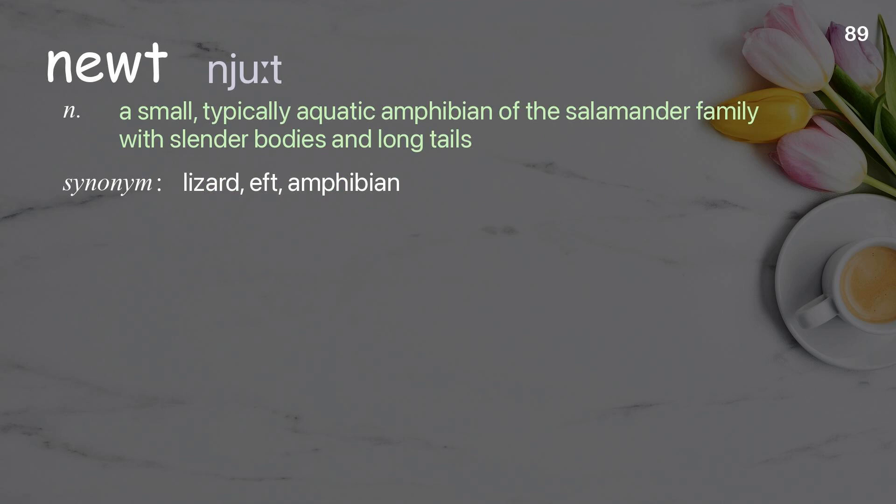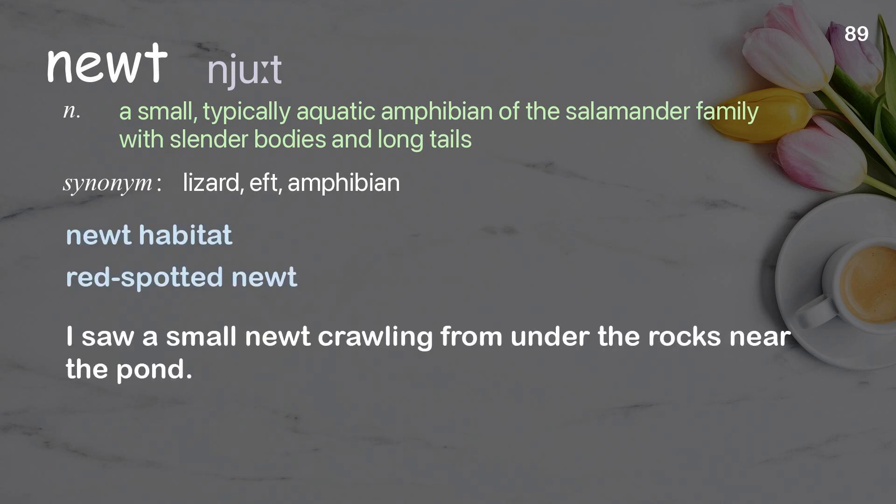Newt: a small, typically aquatic amphibian of the salamander family with slender bodies and long tails. Examples: newt habitat, red spotted newt. I saw a small newt crawling from under the rocks near the pond.